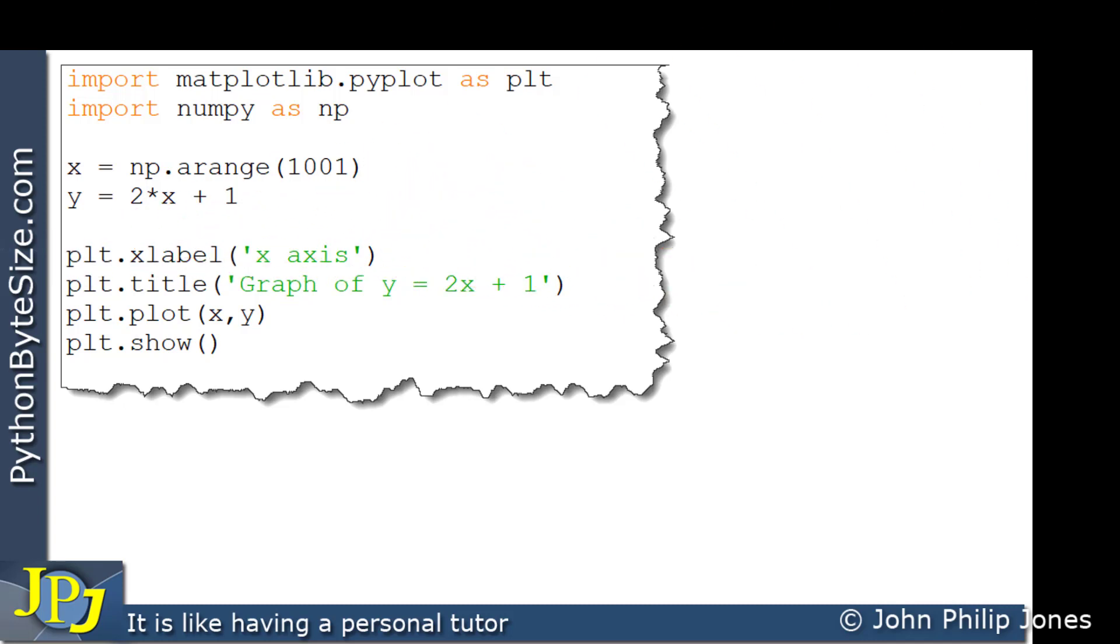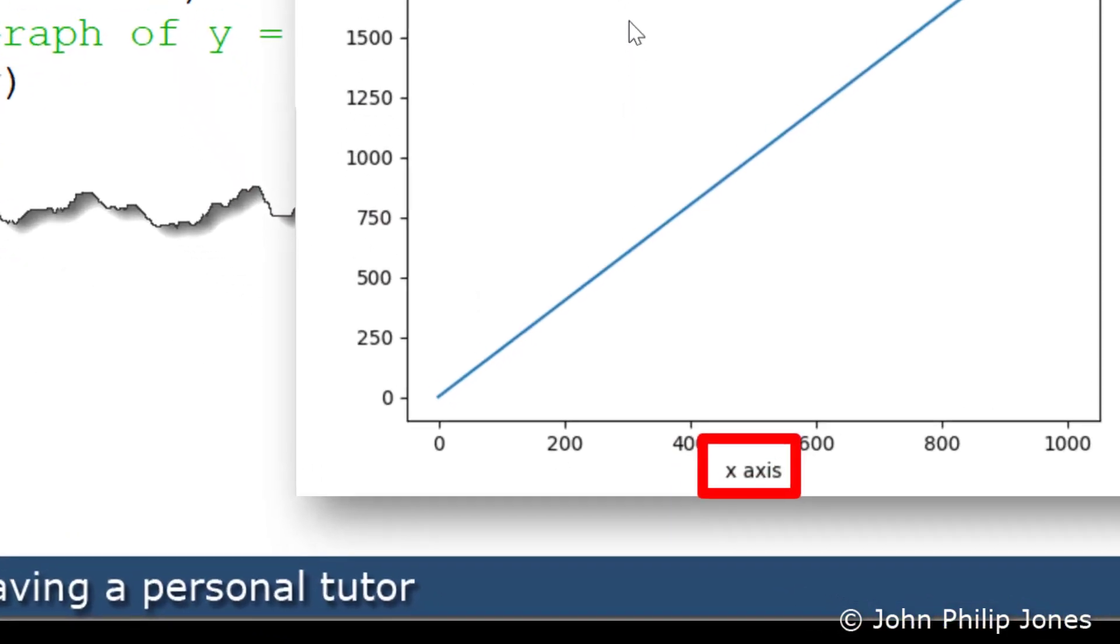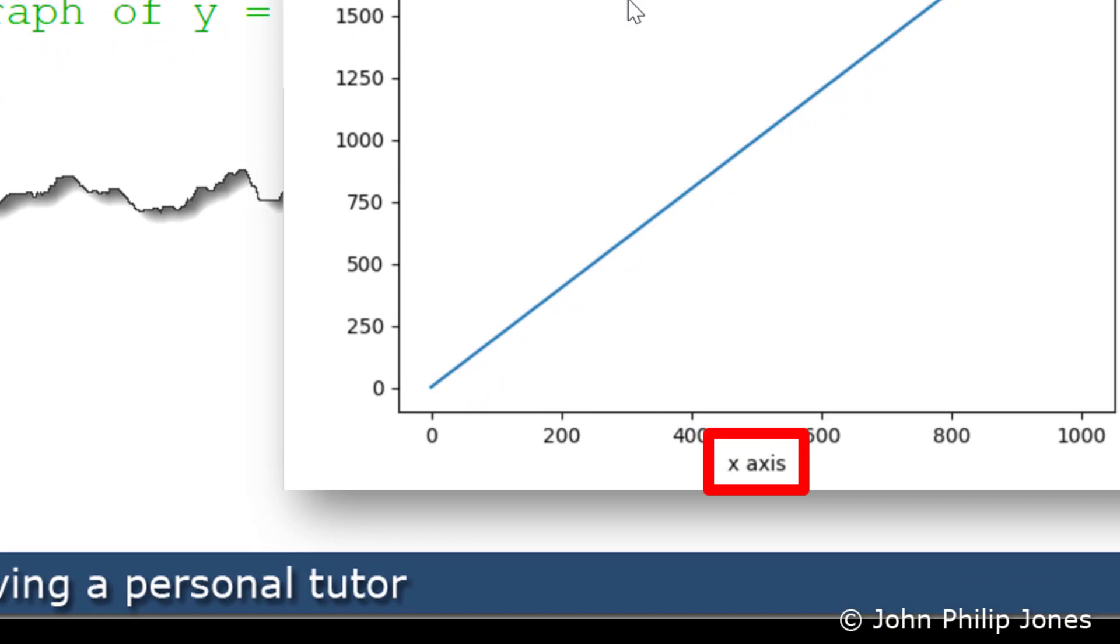So if we now look to the runtime for this program, what we're going to see is that this will give us the following, and you can see here we have the string, and that string will appear, as you can see, down here as x-axis.